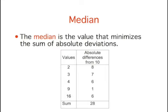The median is the value that minimizes the sum of absolute deviations. Here, the absolute differences from the arbitrarily chosen number 10 are shown. The total is 28. The sum of the absolute deviations from the median of 4 is only 19. Of course, the value that minimizes the sum of absolute deviations is also the value that minimizes the average absolute deviation.